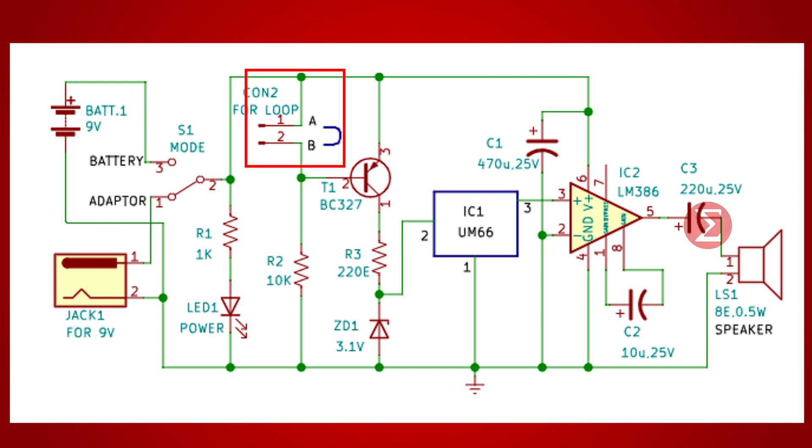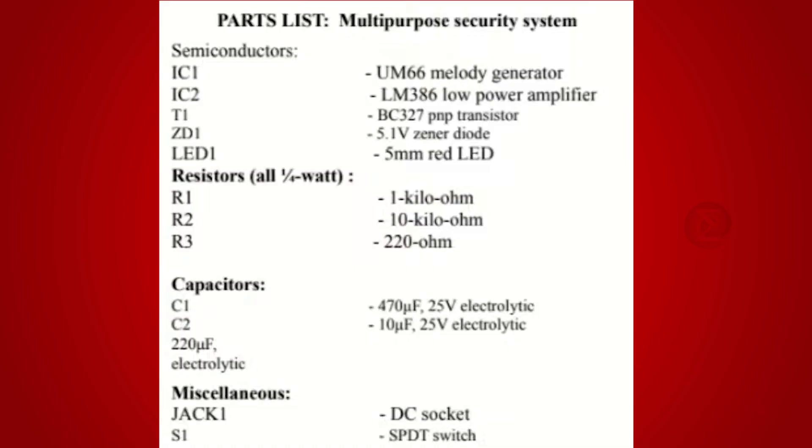For security we need a loop which can be created with the help of a small jumper wire. From the part list you can see UM66, a melody generator IC is used to generate the alarm voice. A LM386 low power amplifier IC and BC327 PNP transistor is used. An LED is used to indicate whether the circuit is enabled or not. Apart from this some resistors and capacitors are used.